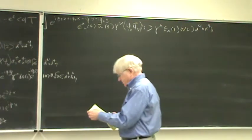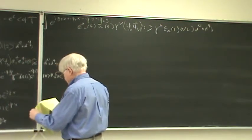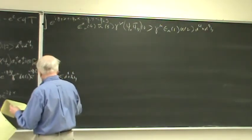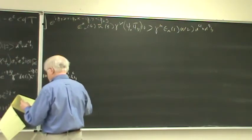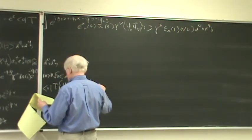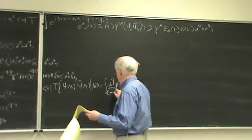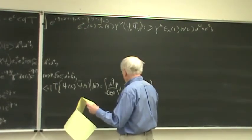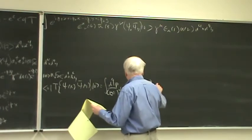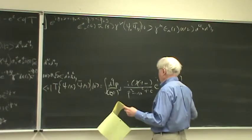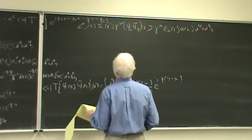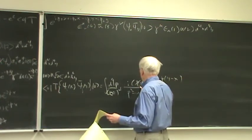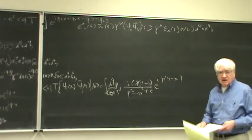So remember what the propagator is for the fermion, for the spin 1/2 particle, or in particular an electron, it would be Psi of X, Psi bar of Y, is integral D4 P over 2 pi to the 4th, I, P slash plus M, that's a matrix of course, over P squared minus M squared plus I epsilon, and it's E to the I P times Y minus X, and this thing, if you want, is IJ, so this is the matrix here IJ, and this is delta IJ.